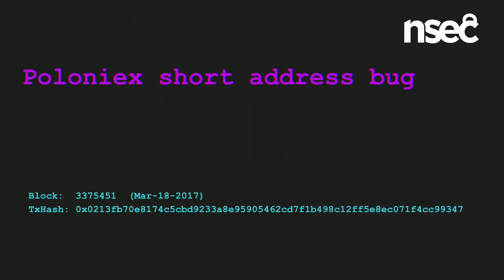I'm going to talk about a bug affectionately called the Poloniex short address bug. Poloniex, if you don't know, is a centralized exchange — it holds user funds, maintains off-chain order books, and allows off-chain trading faster than block time. Consequently it holds user funds in escrow and has a series of really large wallets. The potential consequences of this bug were draining Poloniex's entire supply of Golem token — an EIP-20 token. Luckily the actual consequences were none.